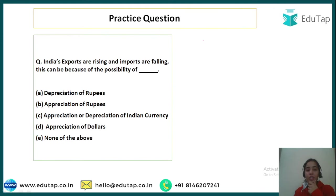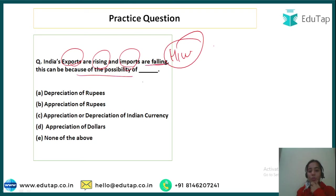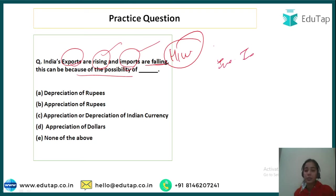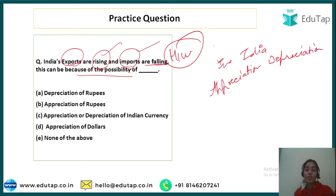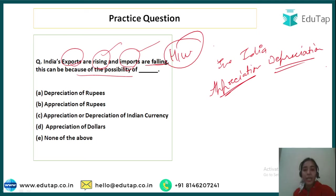So this is appreciation versus depreciation. Here is a practice question for you: India's exports are rising and imports are falling — what could be the reason? Also think about which is better for India: appreciation or depreciation of the currency? Try to give one or two lines of answer in the comment section.